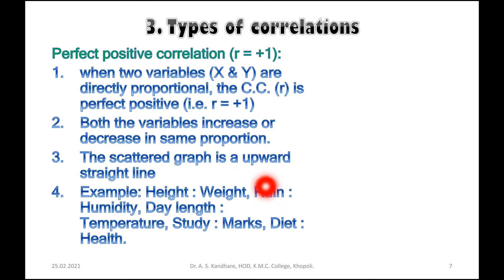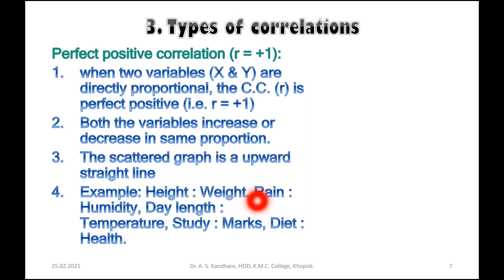Another example is rain and humidity — rain is one variable and humidity is another variable. Similarly, day length and temperature are also positively correlated variables.